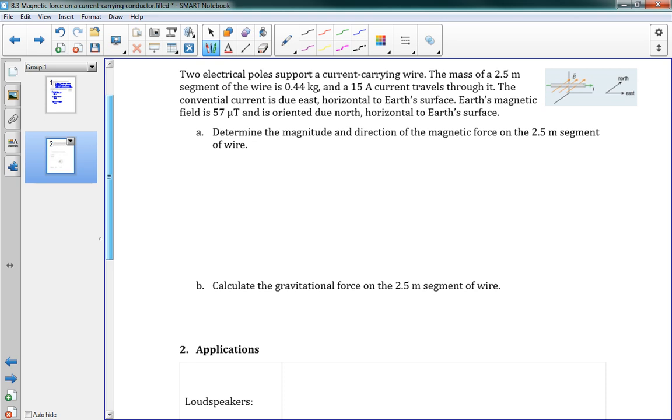Okay, so we want to determine the magnitude and direction of the magnetic force. Well, we have our equation here. Fm is equal to ILB sine theta. And we've got our current here. Current was 15 amps. L, the length is 2.5 meters. B is 57 microteslas. And so that's one piece you need to know how to do here, is how to work with micro. So micro, I can put here 57 times 10 to the negative 6. That's what micro is telling me. It's the next one down from milli.